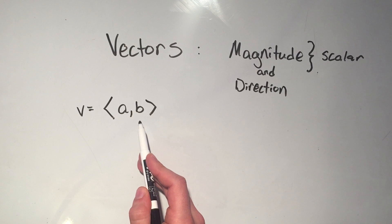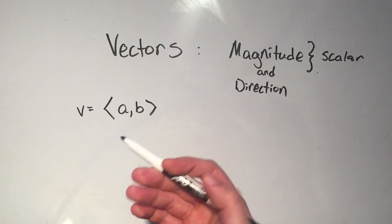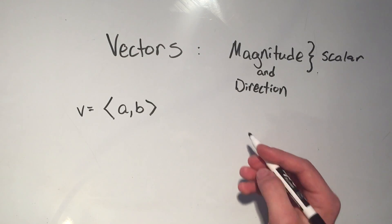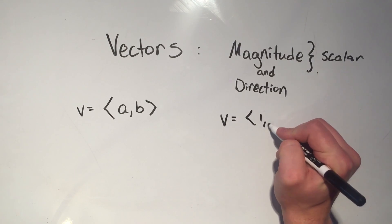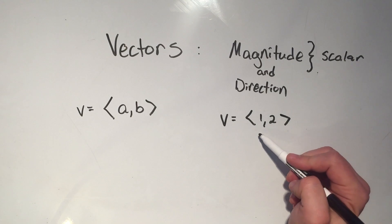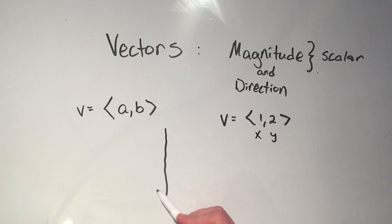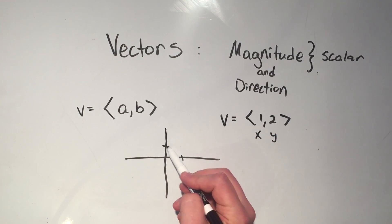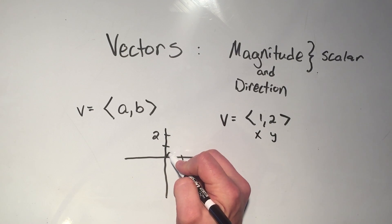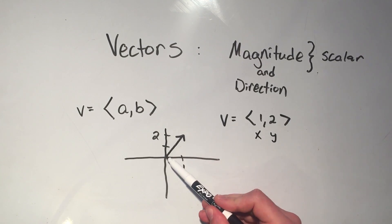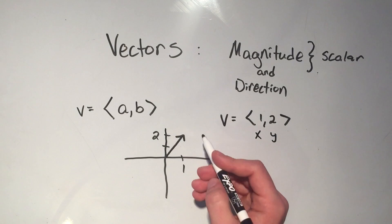If I'm only using two dimensions, I'm only going to use a and b. For three dimensions I'll need a, b, and c — or as many dimensions as you want, you'll need that many components. Basically a and b are two real numbers that signify the direction. For example, let's say our vector is (1, 2) — this means 1 in the x direction and 2 in the y direction. If I graph this vector, I go 1 in the x direction and 2 in the y direction, then from the origin I draw an arrow. It's kind of like a line segment connecting to the origin.